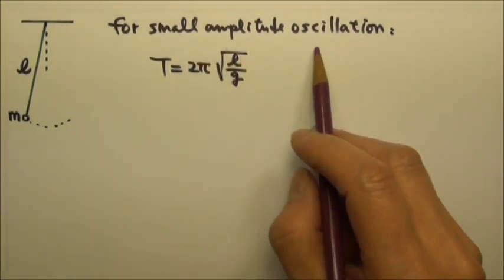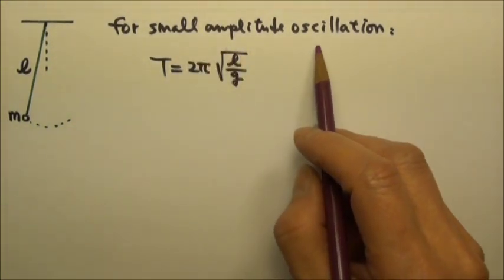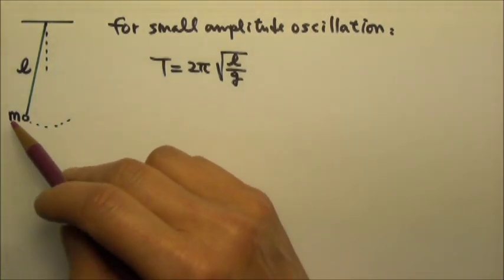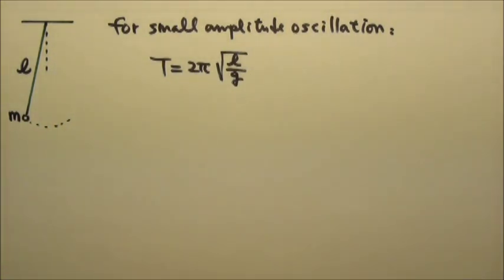If the amplitude is too large — say more than 10 degrees — the pendulum will still oscillate, but the oscillation would no longer be simple harmonic.